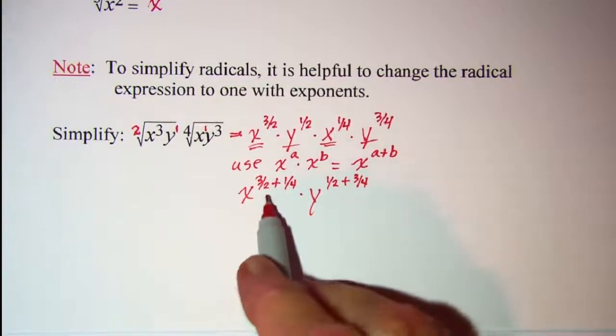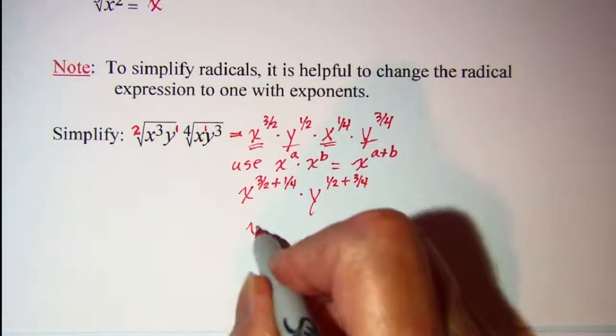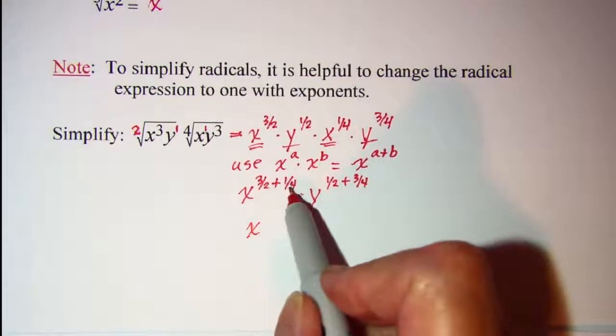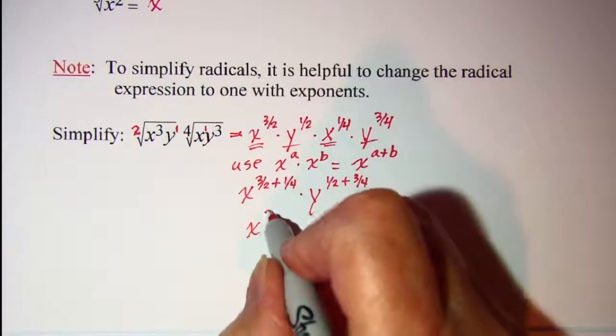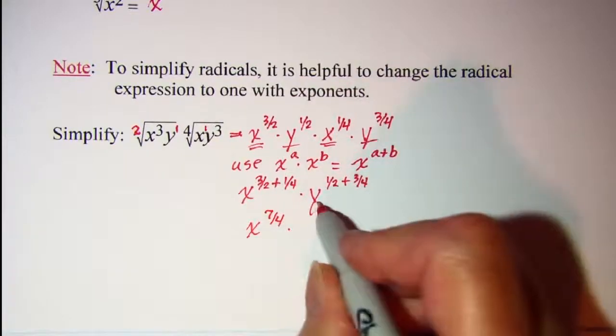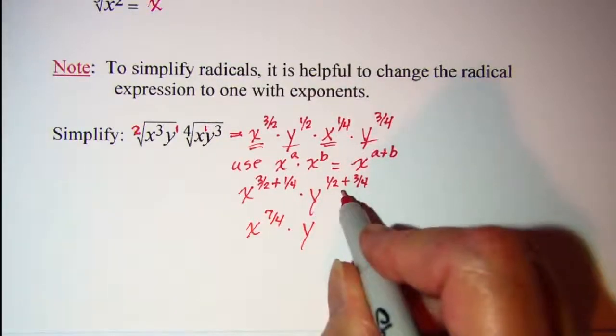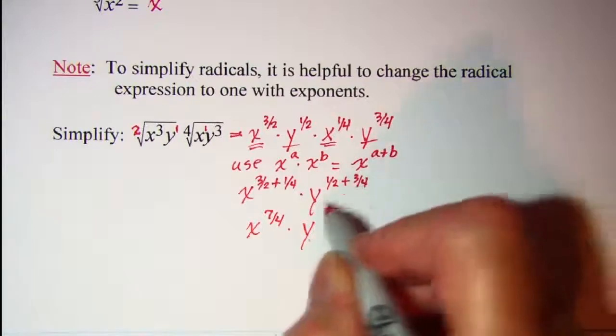Now when we add these fractions together, 3 halves plus 1 fourth combines to give me 7 fourths and this one will be 5 fourths.